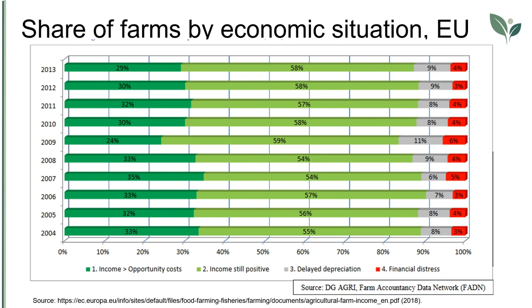This graph shows different economic situations of farmers in the EU in the period 2004 to 2013. On the right side, red and grey areas show that up to 70% of farms face negative net income. Among them, up to 6% are considered to be in potential financial distress — unable to overcome the negative income.